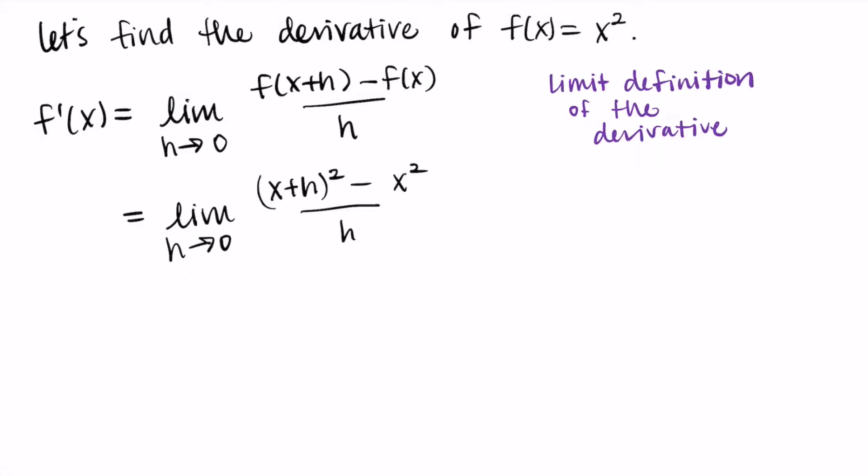To better see this I want to do some simplifying so that I can cancel some things out. Let's get rid of that parentheses in the first bit. So x plus h quantity squared, let's distribute that through. I end up with x squared plus 2xh plus h squared and then I have minus x squared. This is all divided by h.